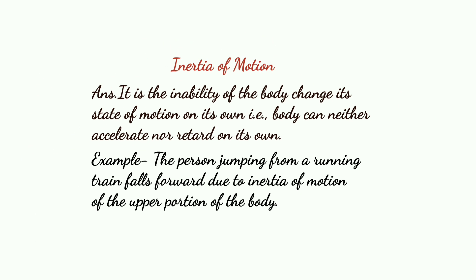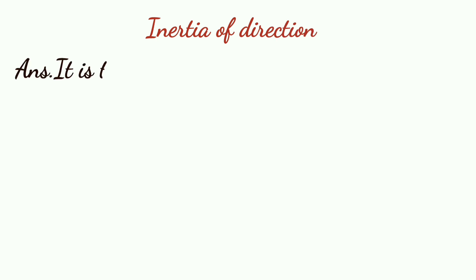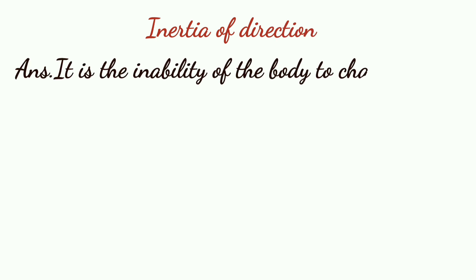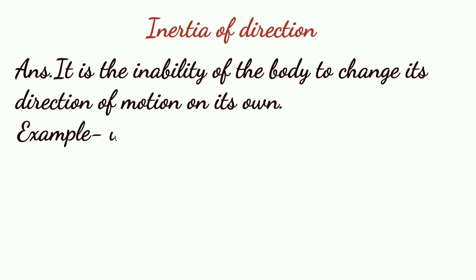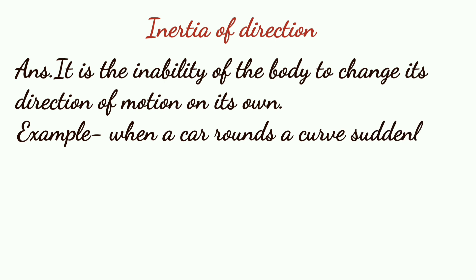Next is inertia of direction. It is the inability of the body to change its direction of motion on its own. Example: when a car rounds a curve suddenly, the person sitting inside is thrown outward due to inertia of direction.